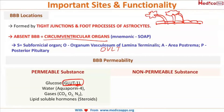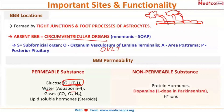Other permeable substances include water via aquaporin-4, gases mainly carbon dioxide, oxygen, and nitrogen, and lipid-soluble hormones — that is, your steroids. The non-permeable substances are protein hormones, dopamine, and H+ ions. All of these components are impermeable to the blood-brain barrier.